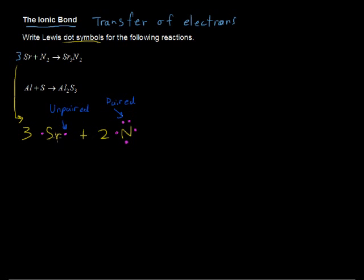If it's unpaired, then you can think of it as these electrons are free to go. So strontium can give up those electrons. And here for nitrogen, those areas where you have unpaired electrons, that's where it could accept some electrons.